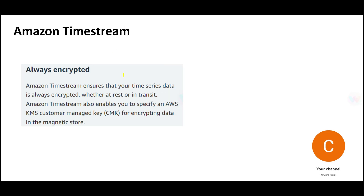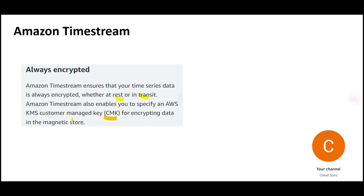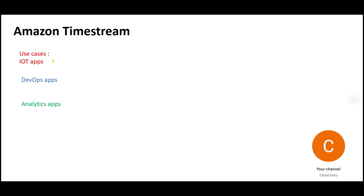Very important for the certification exam: Timestream data is always encrypted — both at rest and in transit. At rest means the data is stored in the database and it is encrypted. In transit means the data is encrypted while moving in or out of the database. You can use CMK for Key Management Service. This encryption is done inside both the magnetic store and the memory store.